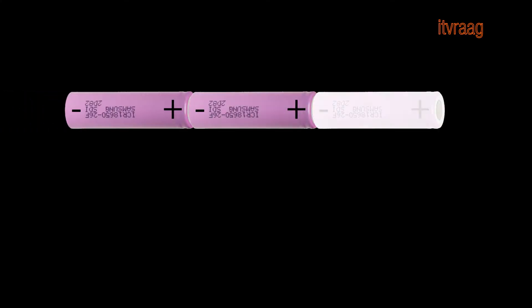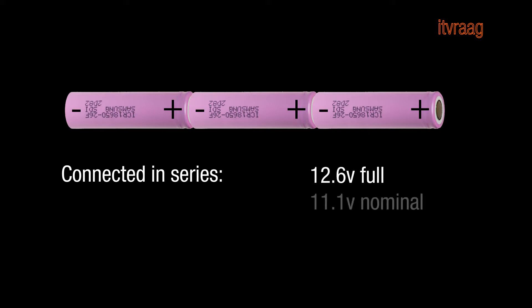Connecting the batteries in series means you connect the plus and the minus and that will add up the voltage. In this case, three batteries will make 12.6 volts when fully charged, 11.1 volts nominal, and 9 volts when discharged.